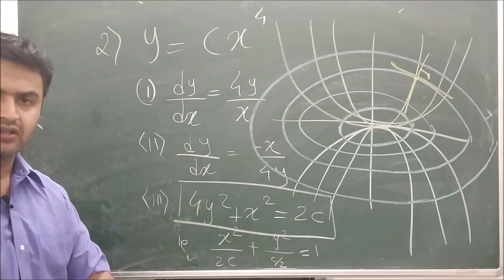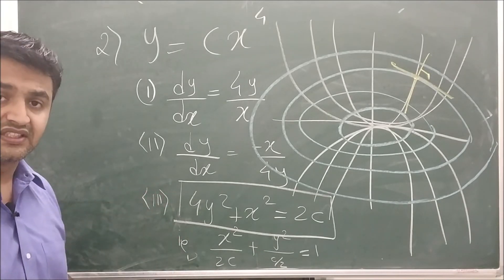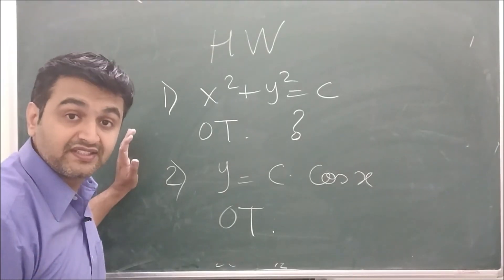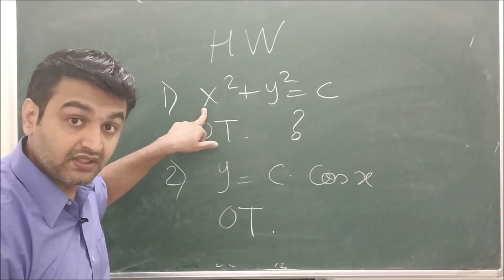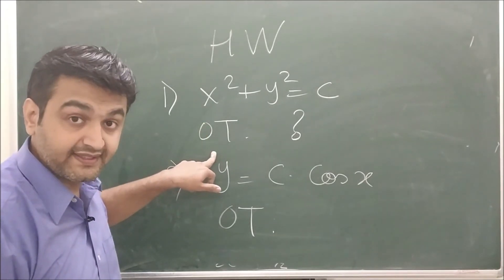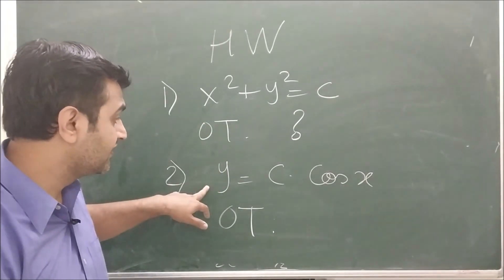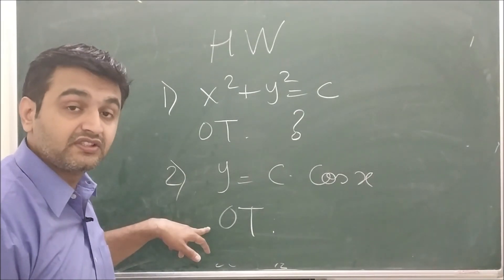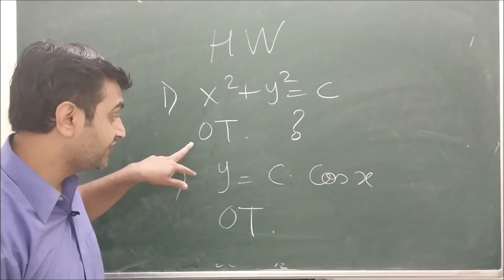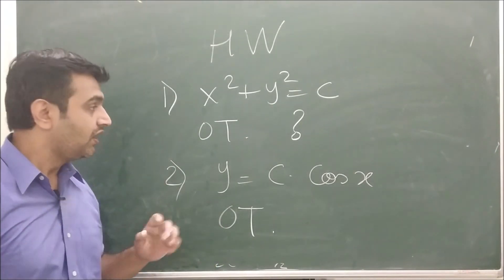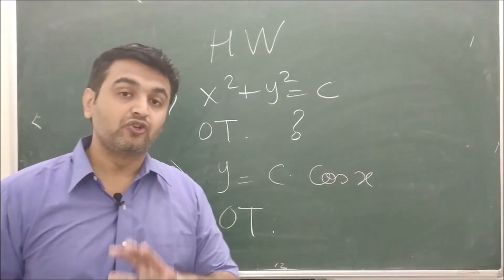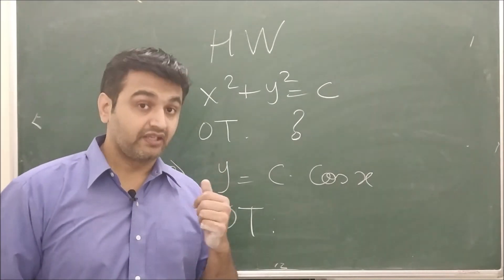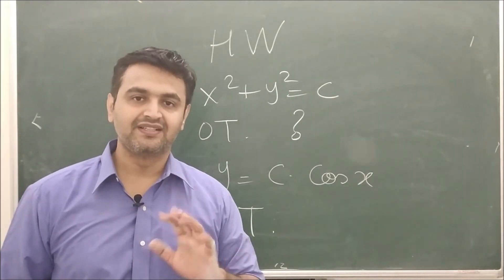Make sure you do the calculations, and if you have any doubts you can ask in the comment section. For practice, here are two homework problems: the first is a given family of circles — find the orthogonal trajectories (you should get lines). The second is a family of cosine curves — find the differential equation and find the orthogonal trajectories. Please post both answers in the comment section. If you liked the video, make sure you like, share, and subscribe. Thank you.